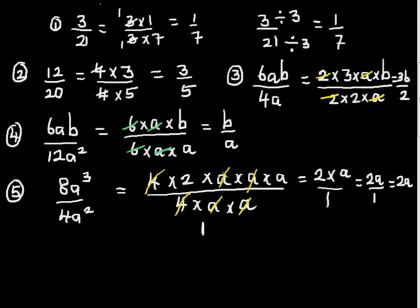In the same way, if nothing remains at the top when every number or expression is cancelled, you write 1 on the top. So 4 divided by 4 is 1, and a divided by a is 1 — everything cancelled gives 1. So 1 times 1 times 1 is 1, and 2 times a is 2a. Therefore 2a divided by 1 is 2a.